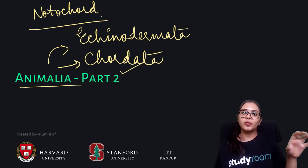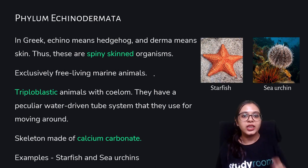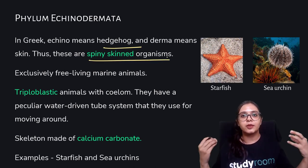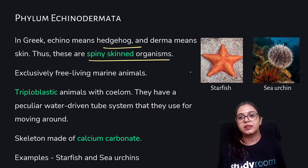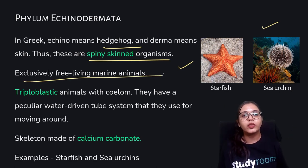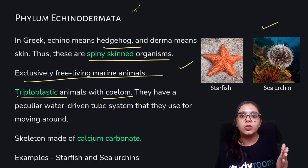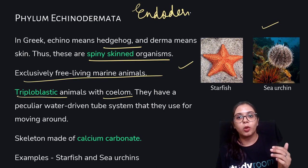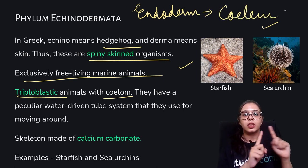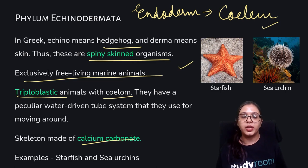Echinodermata — in Greek, 'echino' means hedgehog. These organisms have spiny skin all around their body, like starfish or sea urchins. They are exclusively free-living marine animals, triploblastic, and coelomate — but the coelum here arises from the endoderm and not the mesoderm. They have a peculiar water-driven tube system used for moving around, and the skeleton is made of calcium carbonate. Examples: starfish and sea urchin.